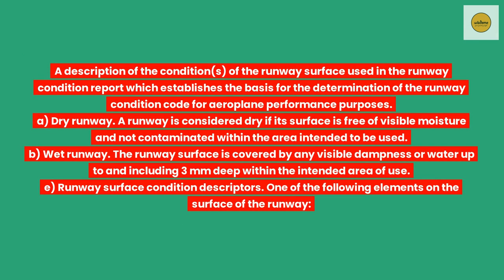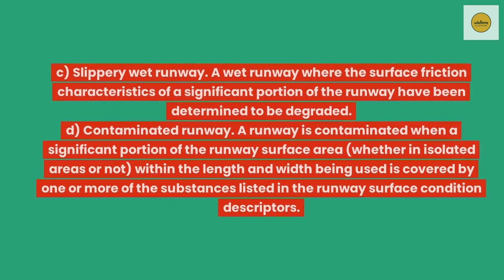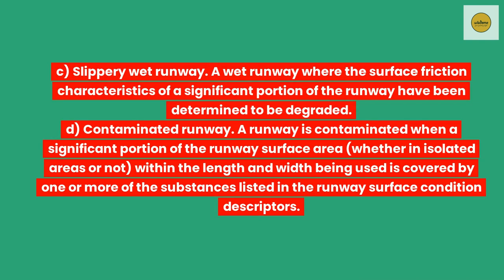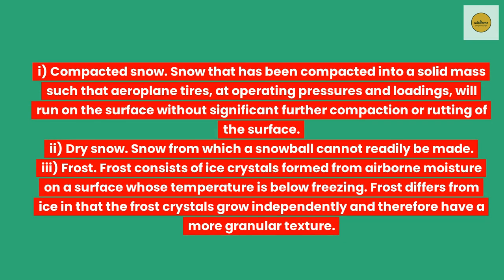Runway surface conditions. A description of the conditions of the runway surface used in the runway condition report which establishes the basis for the determination of the runway condition code for aeroplane performance purposes. Dry runway. A runway is considered dry if its surface is free of visible moisture and not contaminated within the area intended to be used. Wet runway. The runway surface is covered by any visible dampness or water up to and including 3 mm deep within the intended area of use. Runway surface condition descriptors. One of the following elements on the surface of the runway. Slippery wet runway. A wet runway where the surface friction characteristics of a significant portion of the runway have been detected and determined to be degraded. Contaminated runway. A runway is contaminated when a significant portion of the runway surface area, whether in isolated areas or not, within the length and width being used is covered by one or more of the substances listed in the runway surface condition descriptors. Compacted snow. Snow that has been compacted into a solid mass such that aeroplane tires, at operating pressures and loadings, will run on the surface without significant further compaction or rutting of the surface.